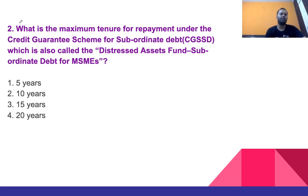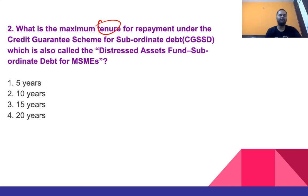Question 2: What is the maximum tenure for repayment under the Credit Guarantee Scheme for Subordinate Debt (CGSSD), also called the Distressed Asset Fund Subordinate Debt for MSMEs? Tenure poochha hai — dhyan rakhenge. Options: 5 years, 10 years, 15 years, or 20 years. The right answer is 10 years.